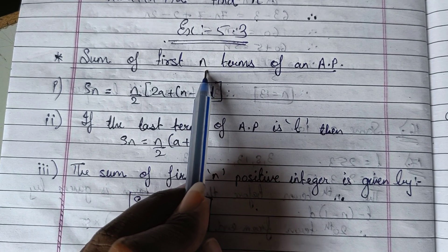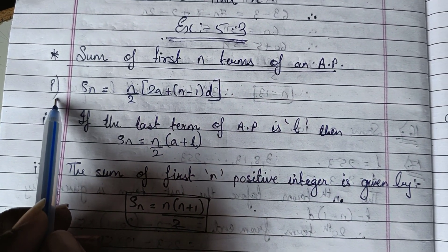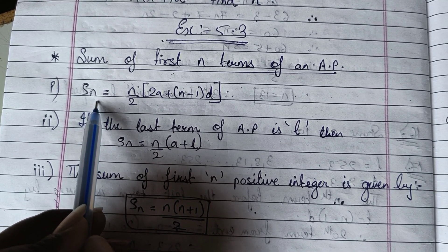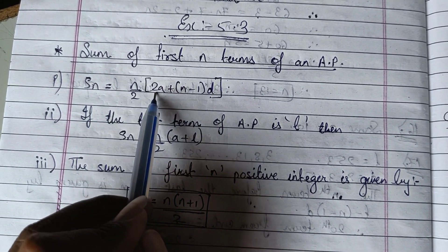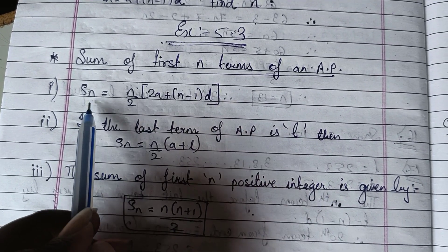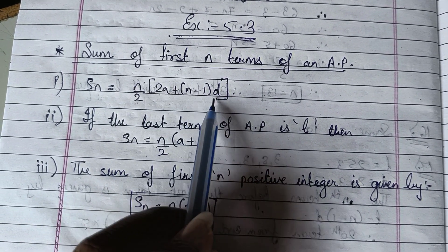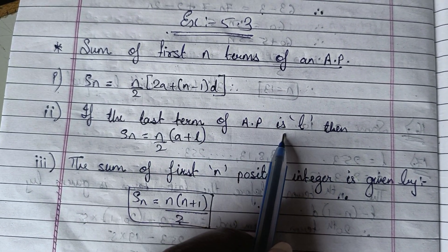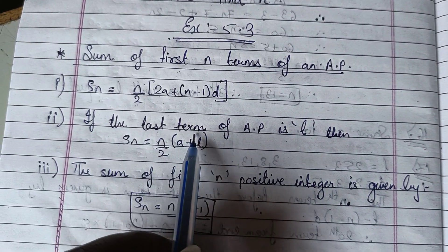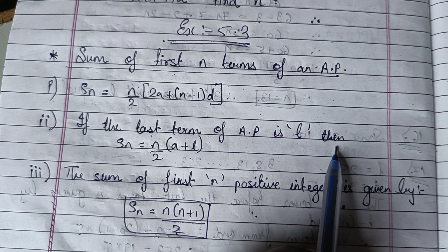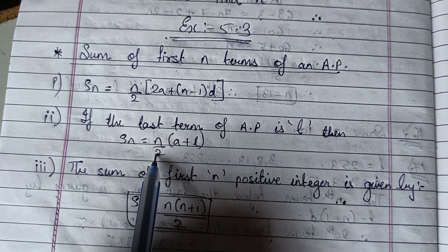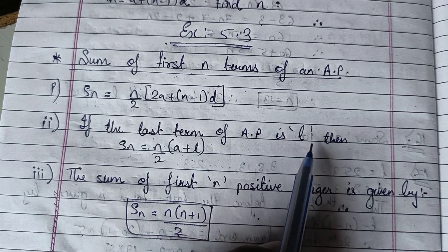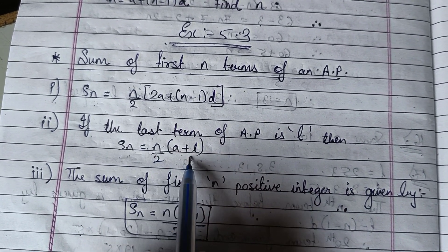For finding out the sum of first n terms of an AP, the formula is: Sn = n/2 multiplied by (2A + (n−1) × D). Second, if the last term of an AP is L, then the formula will be Sn = n/2 × (A + L).